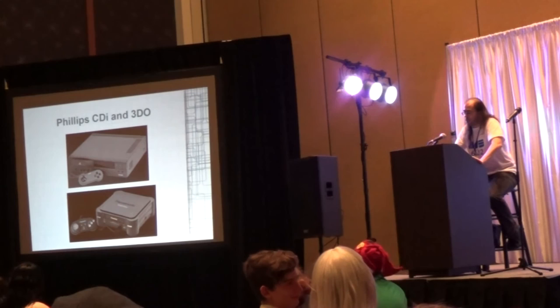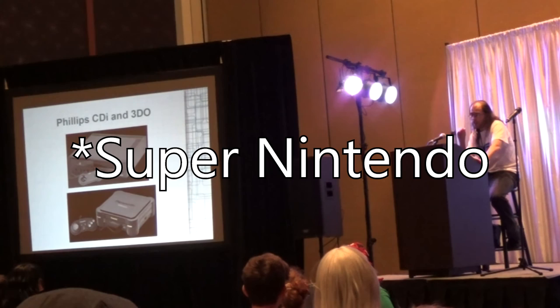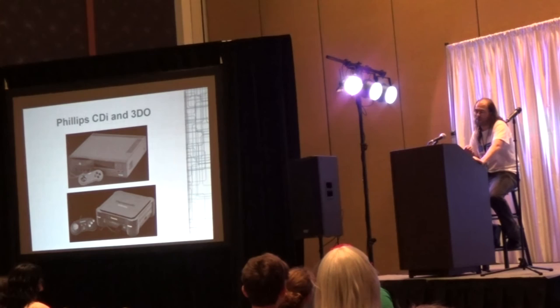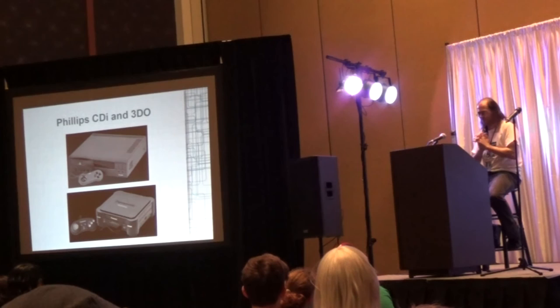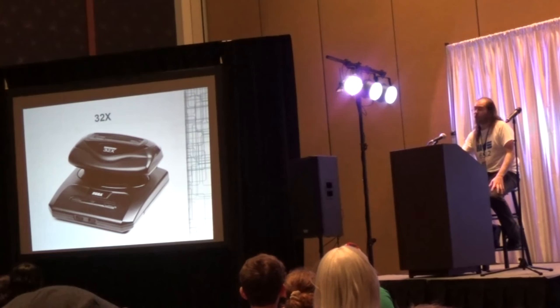Both the CD-i and the 3DO were CD-based consoles intended to become home entertainment systems. CD-i was in '91, 3DO was in '93. CD-i was originally a planned CD add-on to the Super Nintendo, but the contract fell through. CD-i actually had some Nintendo titles published, but they were terrible — the aforementioned Zelda CD-i games and Hotel Mario. Interestingly, the 3DO was a very early 32-bit system.